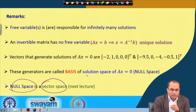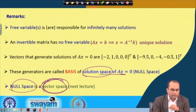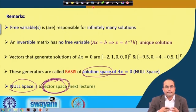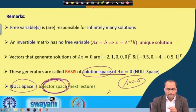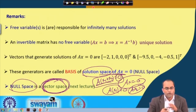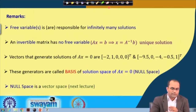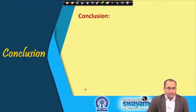One key property of this solution set of A x = 0: if we add two solutions, the new solution is also a solution of A x = 0 — because if A x1 = 0 and A x2 = 0 then A(x1 + x2) = 0. Also, multiplying any solution by a scalar also gives a solution. These properties are what make the null space a vector space, and this will be discussed fully in the next lecture.